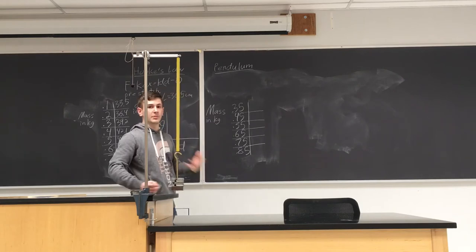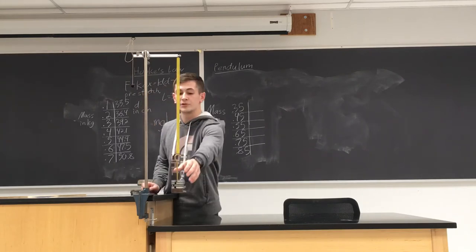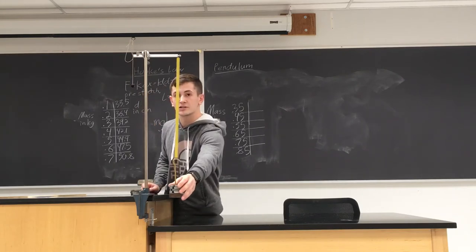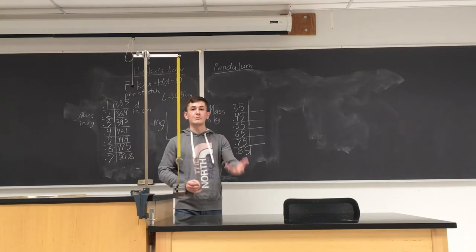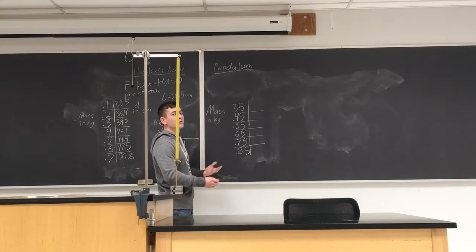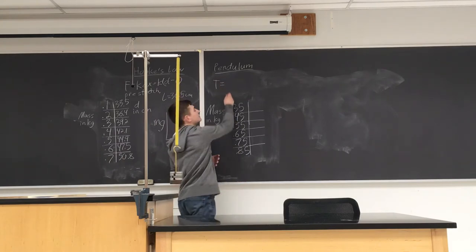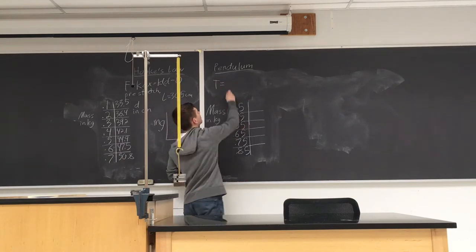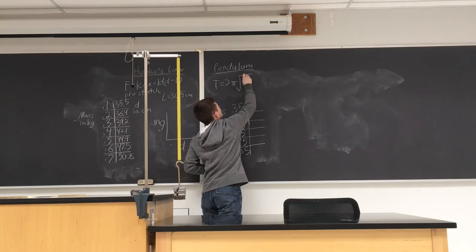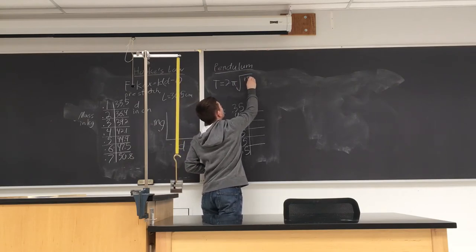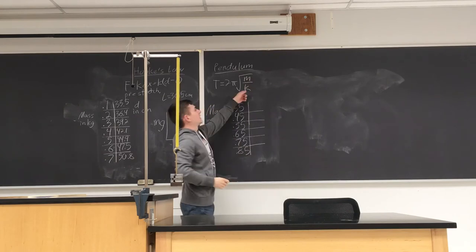The second method uses the period of oscillation. When the spring oscillates — if you pull it down a little bit — the spring will oscillate in simple harmonic motion. We know that the period of this oscillation T equals two pi times the square root of m over k.